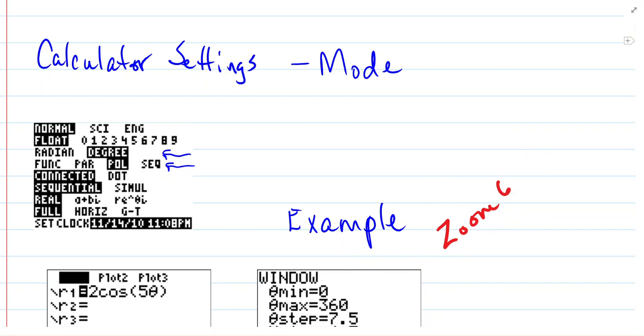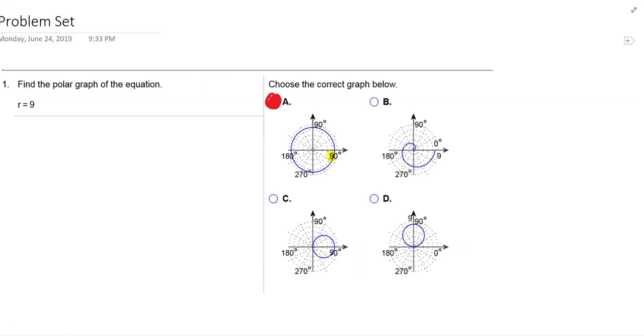So let's go look at our problem set. The first one says find the polar graph of the equation. If you try this on your calculator, this is saying a radius of 9 and going from 0 to 360. And this, when I first looked at it, was confusing because I saw 90 here. But this is 0 degrees, 90, 180, 270.